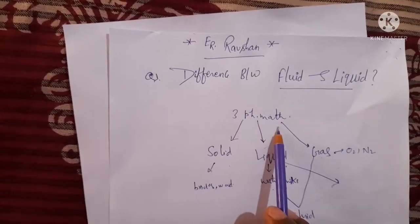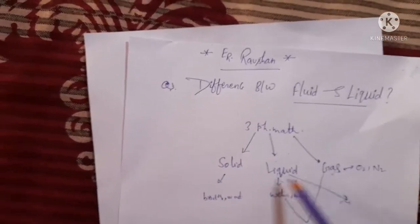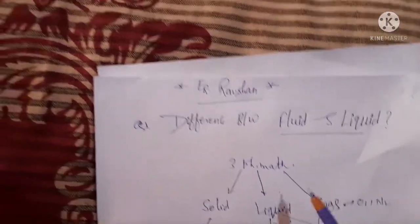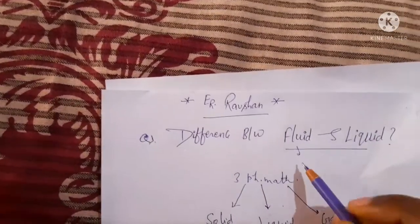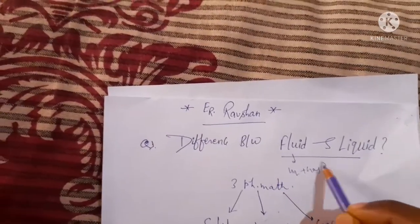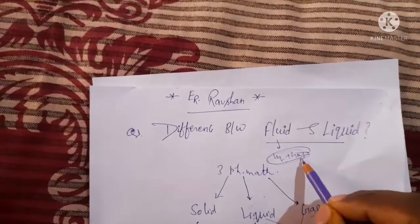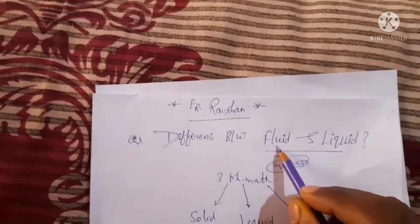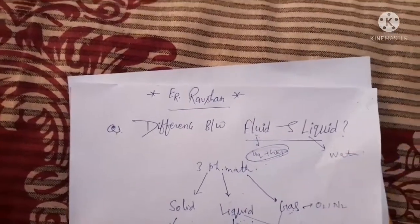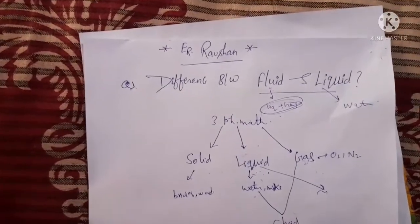Only liquid is one of the three phases of matter. But if both liquid and gas are considered together, then it is known as a fluid. So fluid is liquid plus gas. Both are considered in fluid, while only liquid — such as water, milk, and so on — is just the liquid phase. That is the difference between fluid and liquid. Thank you.